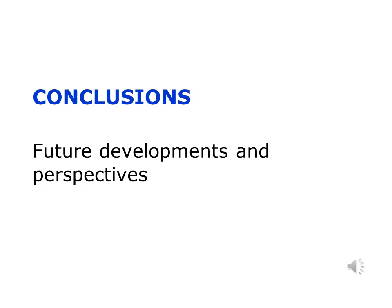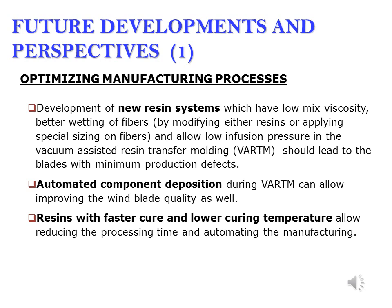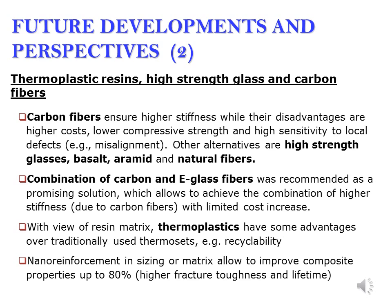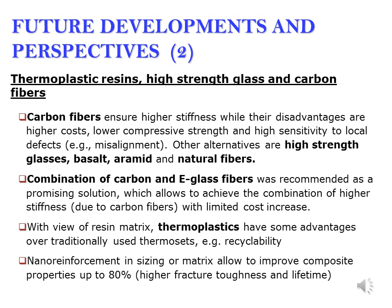Let us summarize our observations. Development of new resin systems with low viscosity and better wetting of fibers can lead to blades with fewer defects. Promising material systems for wind blades include thermoplastic resins, high-strength glass, and carbon fibers. My name is Leon Mishnaevsky and I am a senior researcher at the Technical University of Denmark. Thank you very much for your attention.